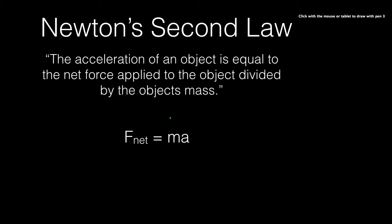We're going to talk about Newton's second law, which states that the acceleration of an object is equal to the net force applied to the object divided by the object's mass. If we take that definition and make an equation out of it, it says the acceleration of an object, A, is equal to the net force applied to the object, force net, divided by the object's mass.